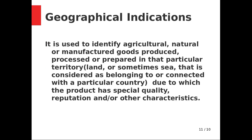Geographical indication means products are developed from resources found at a specific location. For example, aloe vera trees planted in a particular area in America — that geographical area is very important for the companies that develop products from those trees. Geographical indication is used to identify agricultural, natural, or manufactured goods produced in a particular territory, connected with a country due to which the product has special quality, reputation, or other characteristics. For example, petrol is very cheap in Dubai because it is produced there.